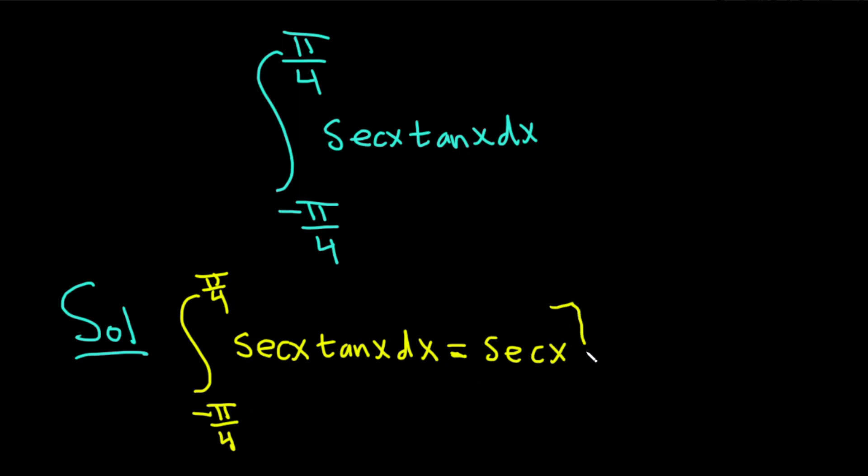This is a definite integral, so we have to write our limits. So negative pi over 4 goes down here, and pi over 4 goes up here.